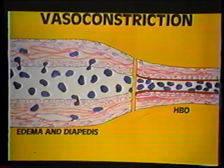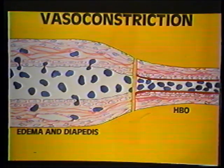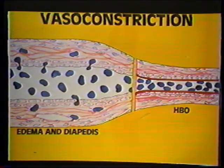Oxygen is toxic and causes a profound vasoconstriction every time someone breathes it under pressure. At two atmospheres absolute, there is a decrease in blood flow of about 20% in muscle. This does not decrease oxygen supply, however. We have a 20% decrease in blood flow, but we have 15 times the amount of oxygen dissolved physically in the plasma. So there's a vast net gain in oxygen supply to the tissues, despite vasoconstriction.